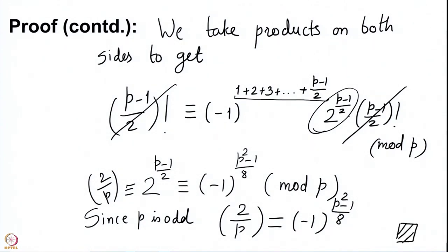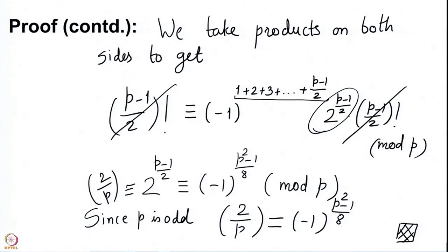This allows us to compute the Legendre symbol for the integer 2 with respect to any odd prime. The Legendre symbol of 2 by p is 1 exactly when p squared minus 1 by 8 is an even integer, which happens only when p is congruent to plus or minus 1 modulo 8. The only thing that now remains is to compute the Legendre symbol of an odd prime q with respect to another odd prime p — we will try to relate q by p to p by q using reciprocity, and reduce the computation further. We will do this in the next lecture. See you until then. Thank you.